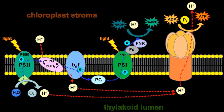Photosystem I and II are very similar in structure and function. They use special proteins called light-harvesting complexes to absorb photons with very high effectiveness. If a special pigment molecule in a photosynthetic reaction center absorbs a photon, an electron in this pigment attains the excited state and is then transferred to another molecule in the reaction center. This reaction, called photoinduced charge separation, is the start of the electron flow and is unique because it transforms light energy into chemical energy.